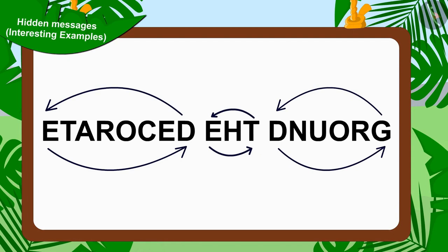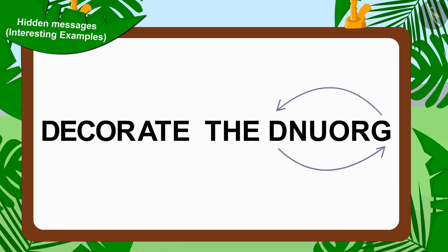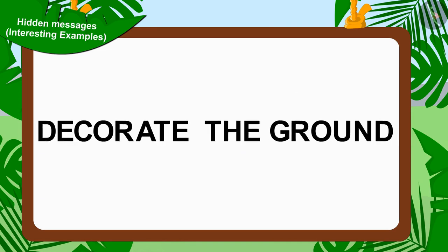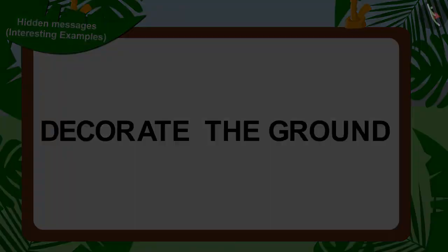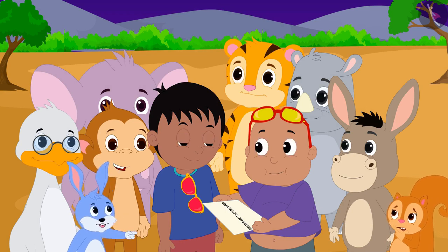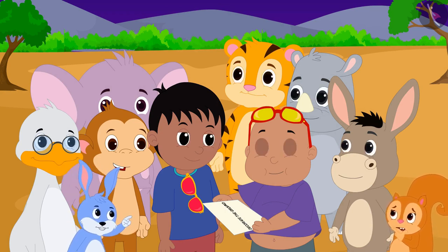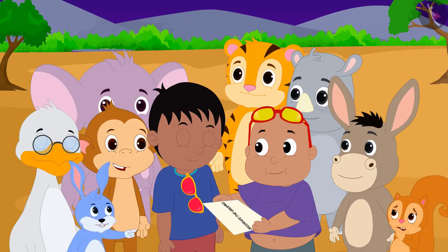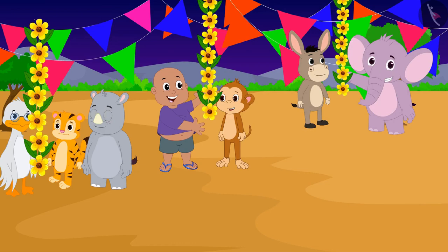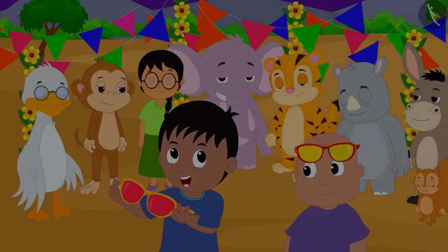In this hidden message of Jeev's, the alphabets of the words are written in reverse order. Jeev's second hidden message is: 'Decorate the ground.' This time, Bunni solved Jeev's hidden message and read it to all the villagers. All the villagers decorated the ground with all their heart.